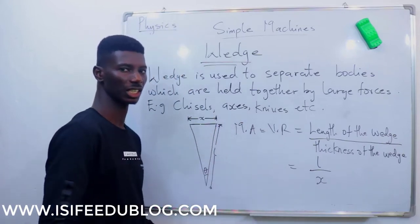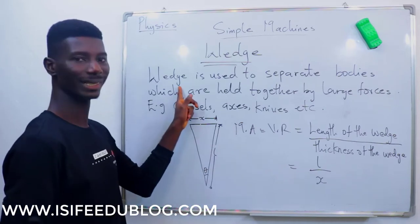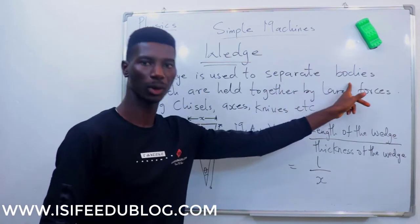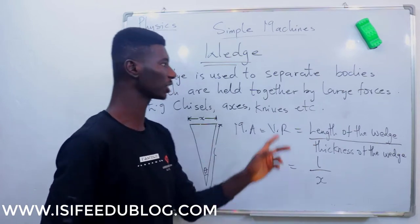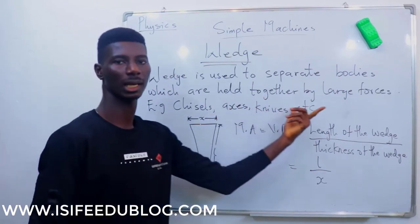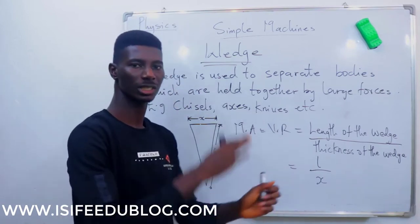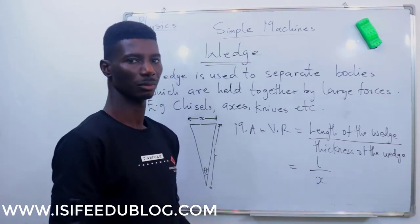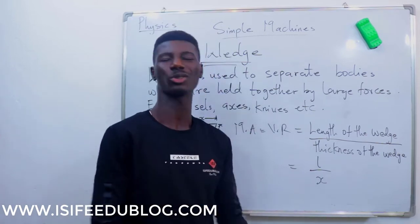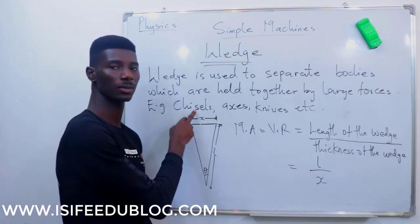What we have here is a wedge. By definition, a wedge is used to separate bodies. Any device or machine you use to separate bodies which are held together by large forces — if you can separate it into so many pieces, you call it a wedge.